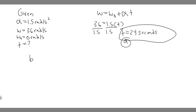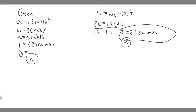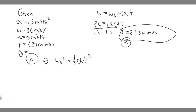Now for Part B: through how many revolutions does the blade turn in this time interval? We're trying to find theta — the angular displacement. We know t equals 24 seconds from Part A. The equation we'll use is theta equals omega 0 times t plus one-half alpha t squared, which is the rotational equivalent of delta x equals v₀t plus one-half at squared.